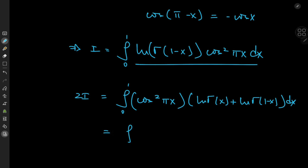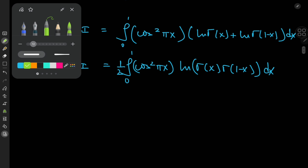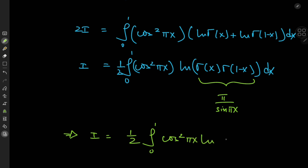Using the properties of the logarithm, we can write this as the integral from 0 to 1 of cosine squared pi x times the logarithm of gamma x times gamma 1 minus x. We now apply Euler's beautiful reflection formula, and expanding by one half leaves i on the left-hand side. Recall that gamma x times gamma 1 minus x equals pi divided by sine of pi x, which implies that i equals one half the integral from 0 to 1 of cosine squared pi x times the logarithm of pi divided by sine of pi x dx.